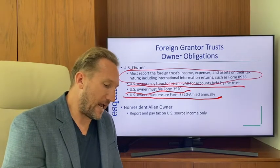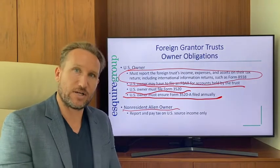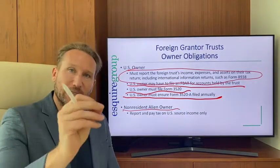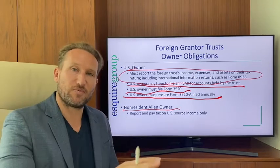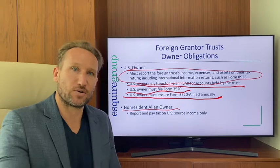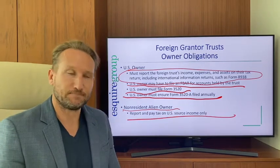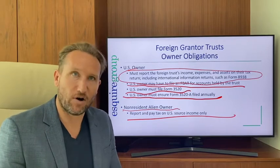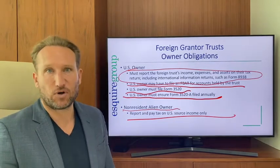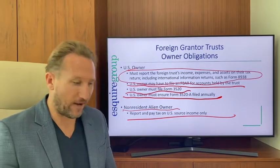For a foreign grantor trust with a non-resident alien grantor — where distribution provisions are limited to the grantor or grantor's spouse during their lifetime — they need to file Form 1040-NR and report any U.S. income the foreign grantor trust had. If the trust had no U.S. income, no filing is required.